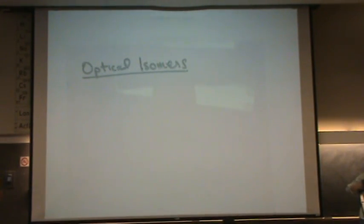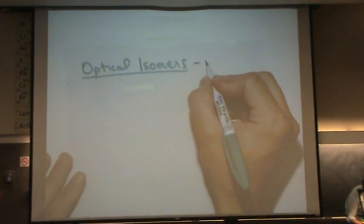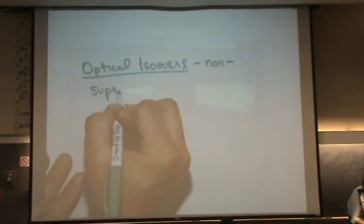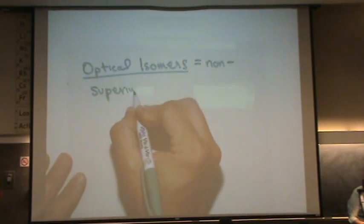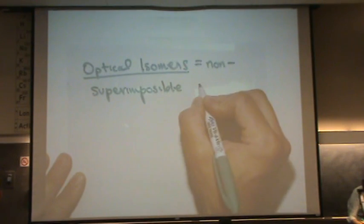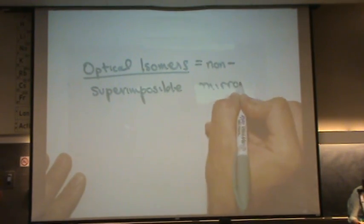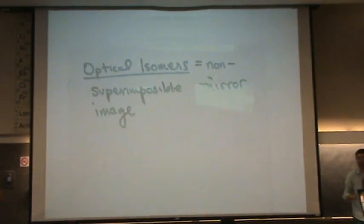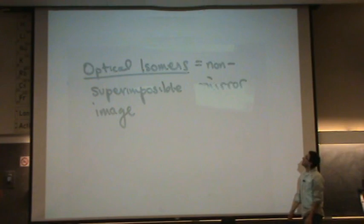Optical isomers, again, a subset of stereoisomers. There's two subsets, the geometric and the optical. For the optical, what it means is there is a non-superimposable mirror image. Again, you're going to see this in OCHEM and bio because a lot of biomolecules in our bodies are optical isomers.